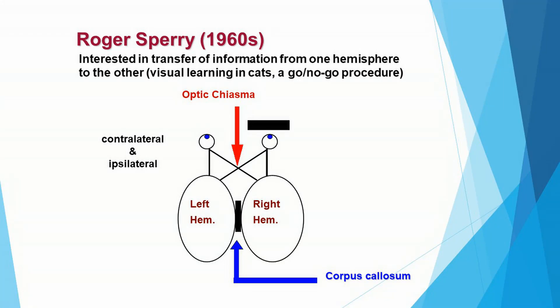Next we're going to talk about so-called split brain studies — what happens when one hemisphere of the brain is disconnected from the other half. This research began in the 1960s, conducted by Roger Sperry, who worked with cats and trained them in a go-no-go procedure. For instance, pressing a pedal when the light's on and not pressing it when the light's off, because you only get food when the light is on. That is a go-no-go procedure.